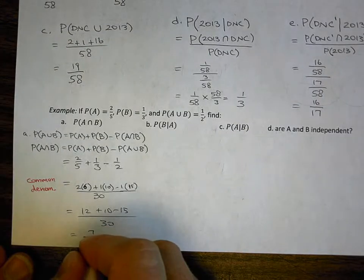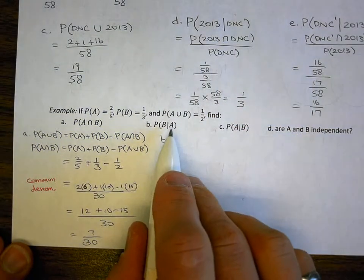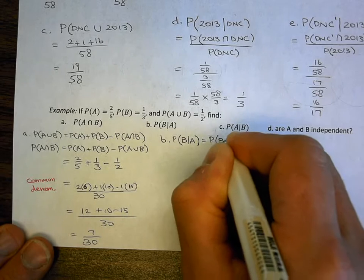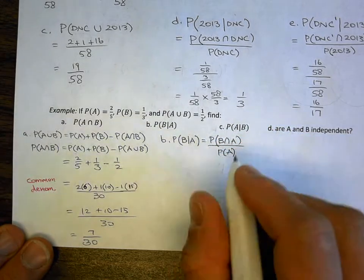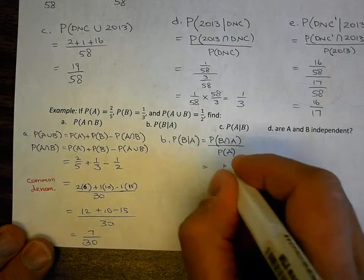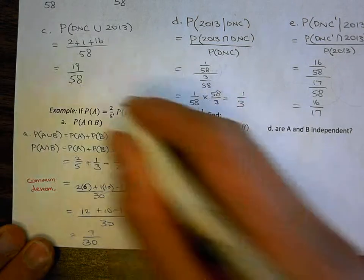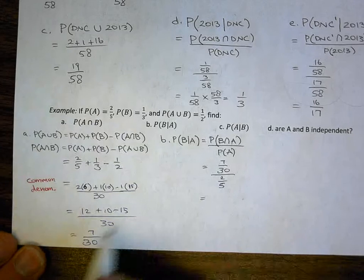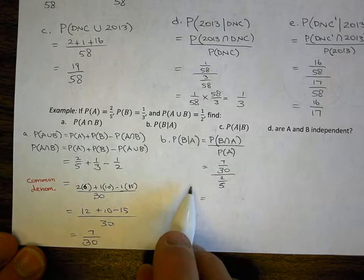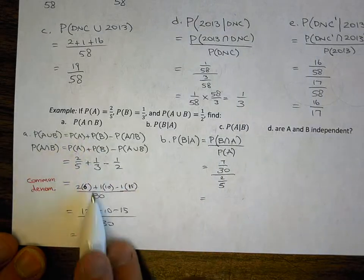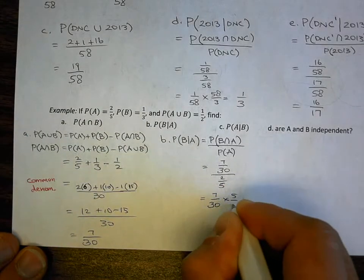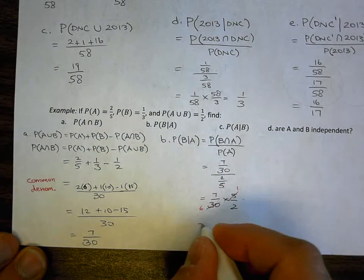Part B: what's the probability of B given A? Using the formula, P(B | A) = P(B ∩ A) over P(A). The probability of the intersection is 7/30 — that's what I just found. Divided by P(A) which is 2/5. So 7/30 times 5/2: the 5 goes into the 30 six times, giving me 7/12. If you're on an IB test and you're not sure about part A, still sub in your answer here — you'll get follow-through marks even if part A was wrong.